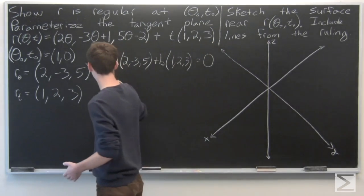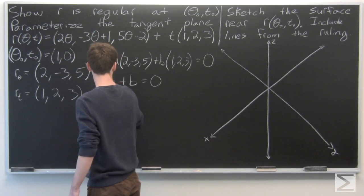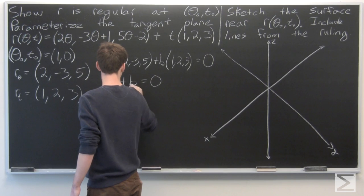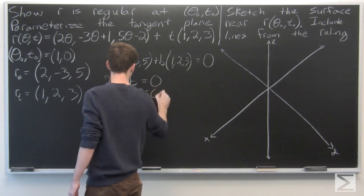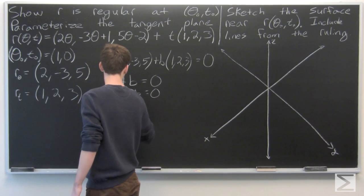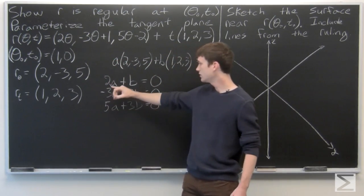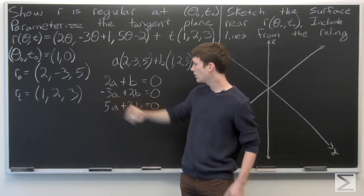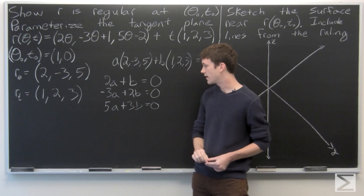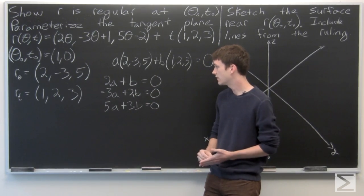We get the system of equations: 2a + b = 0, -3a + 2b = 0, and 5a + 3b = 0. We want all of these equations to be satisfied simultaneously.